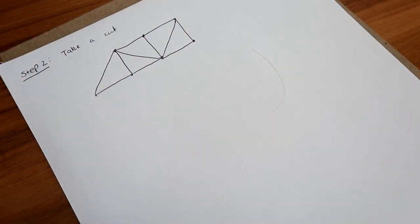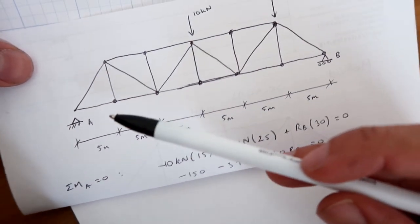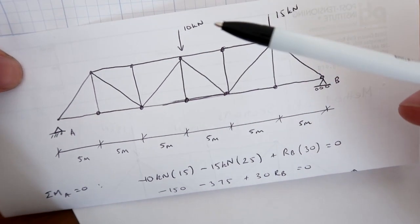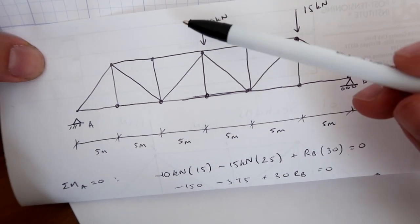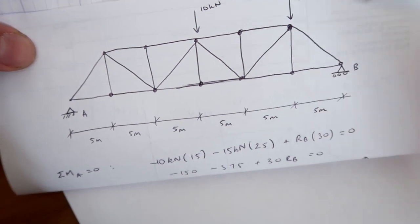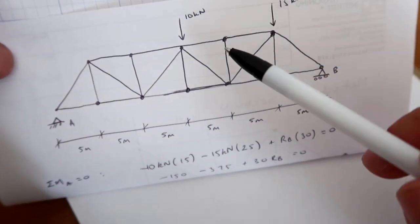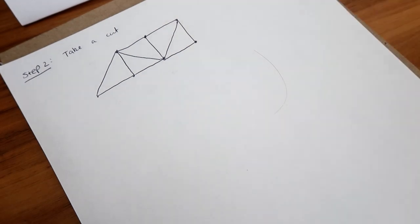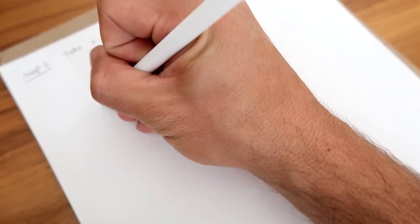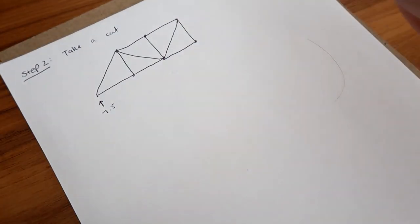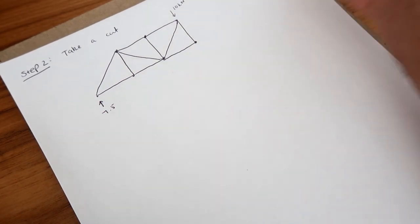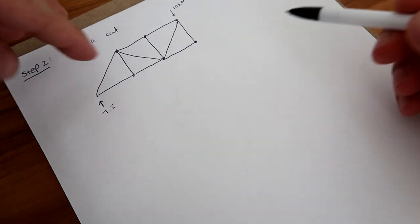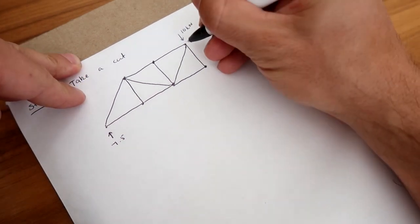Now that we have our support reactions RA and RB, we move to step two: taking a cut somewhere along the truss to calculate the internal forces of the members being cut. In this example I'm going to take the cut right here. I've already drawn the left portion up to that cut, so I'm now going to insert all the forces I've calculated — the RA force of 7.5 kN upwards and the downward 10 kN original load — as all the known forces in the system.